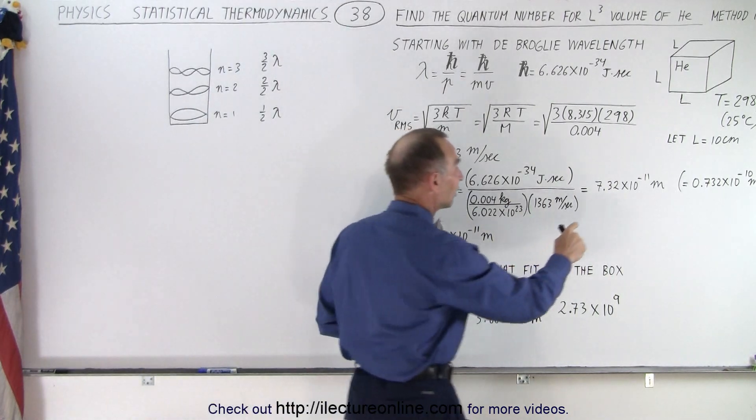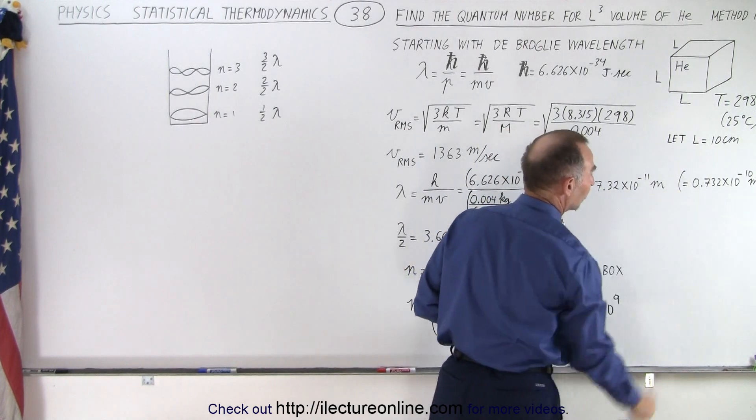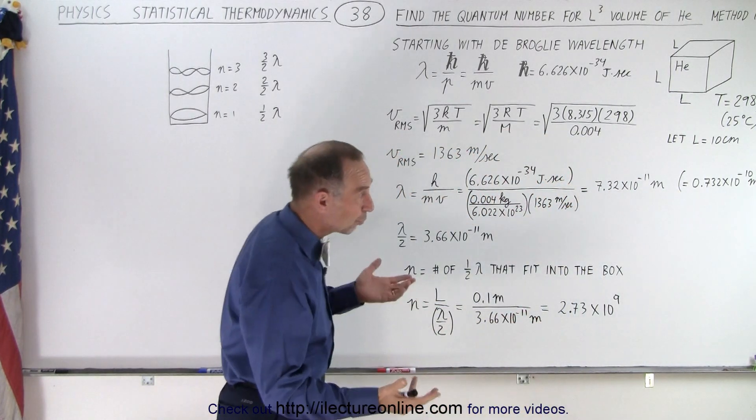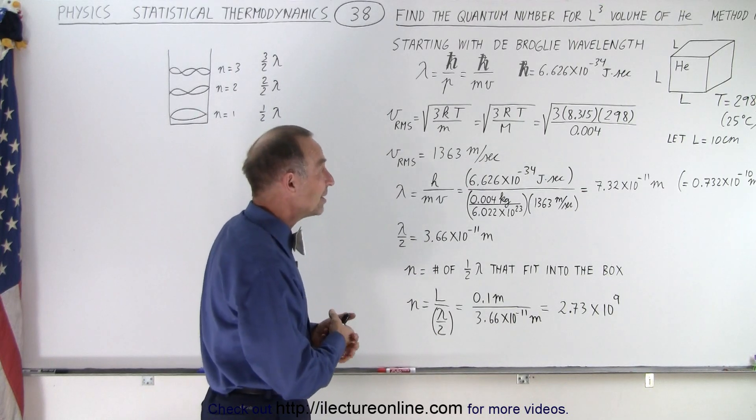That comes out to a wavelength of 7.32 times 10 to the minus 11 meters, or an angstrom's 10 to the minus 10 meters. It's roughly slightly bigger than the Bohr atom radius, so to speak.